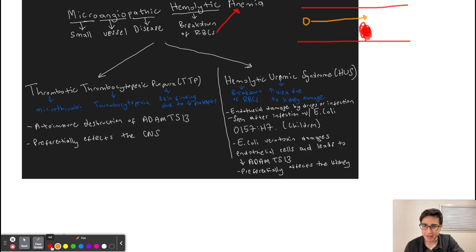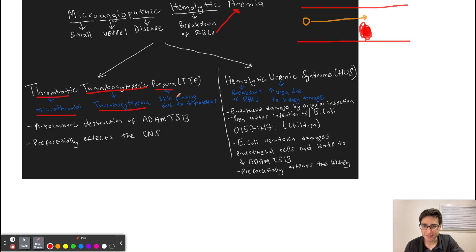This microthrombi formation can be due to TTP, which is an autoimmune process, or hemolytic uremic syndrome, which is most commonly caused by endothelial damage by drugs or an infection. With TTP — thrombotic means there's microthrombi formation, thrombocytopenic means there's thrombocytopenia or low platelet levels, and purpura is a skin finding due to low platelet levels. Patients are going to have purpura because they have low platelet levels from using up platelets to form microthrombi.